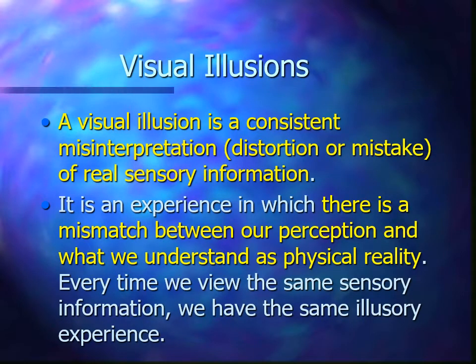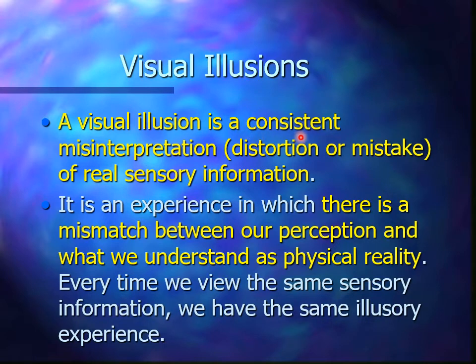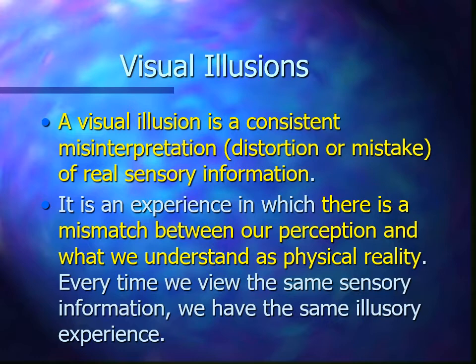A visual illusion is a consistent misinterpretation or distortion of real sensory information — it's going to happen every single time you look at it. You may know that those lines are straight, but you'll always see them as wonky. It is an experience in which there is a mismatch between our perception and what we understand as physical reality. Every time we view the same sensory information, we have the same illusory experience — you will always see that illusion, no matter what, even though you know it's an illusion.